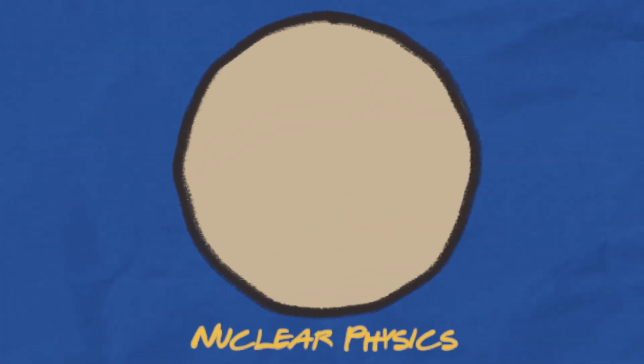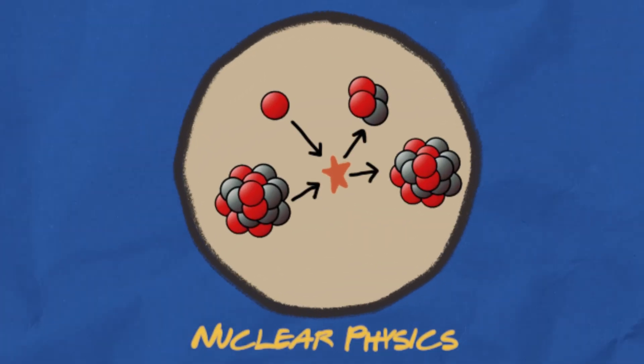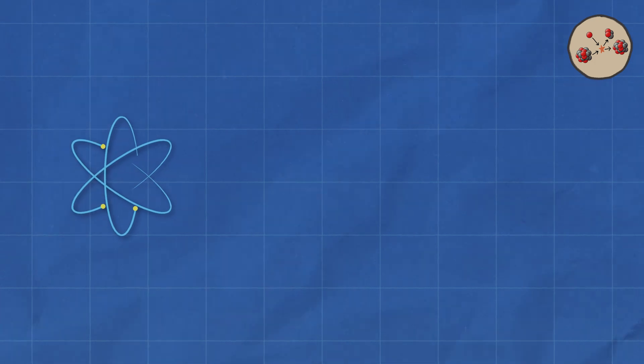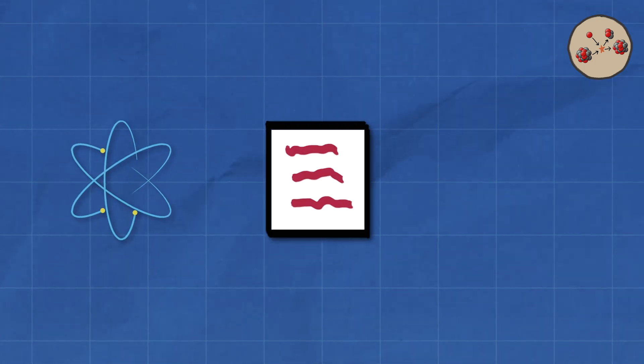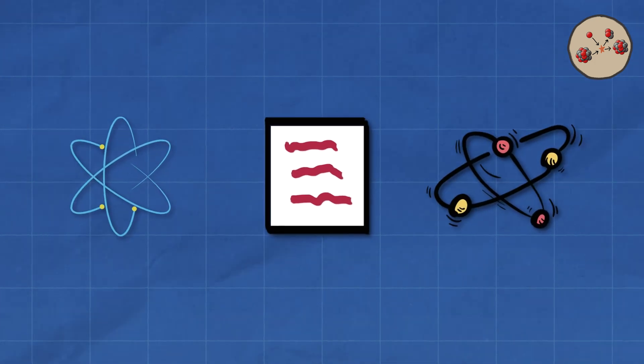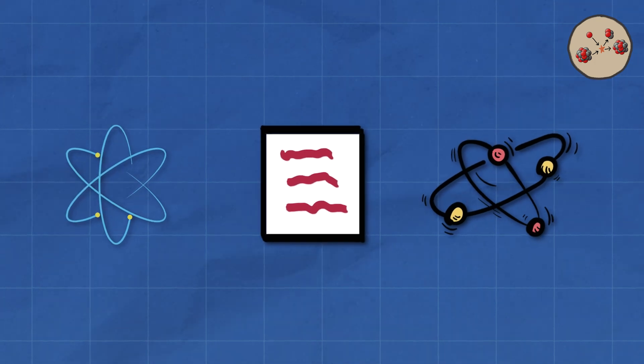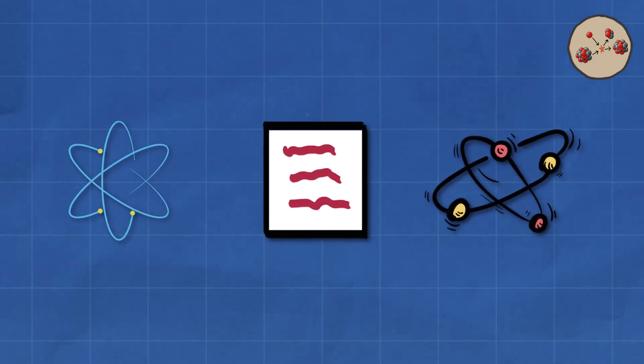Nuclear Physics: Diving into the Atomic Nucleus. This branch of physics explores the structure, properties, and transformations of atomic nuclei, those tiny, dense cores that pack most of the atom's mass.